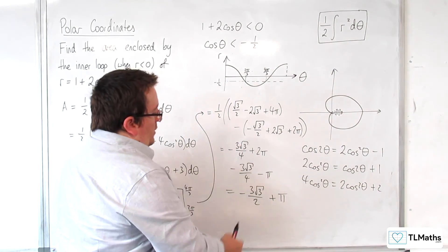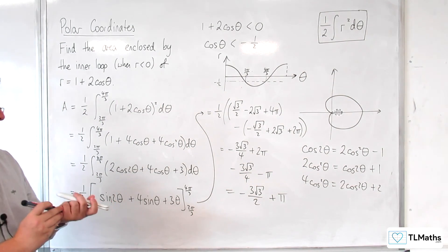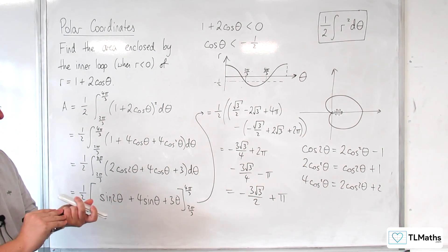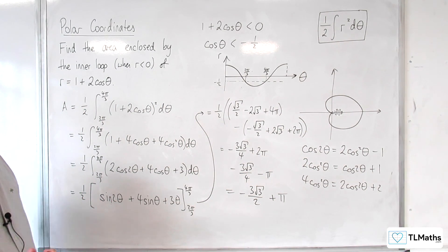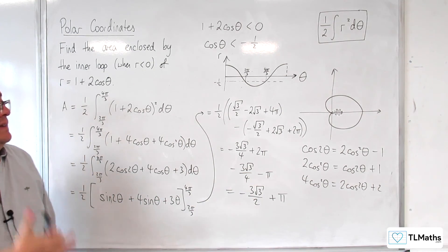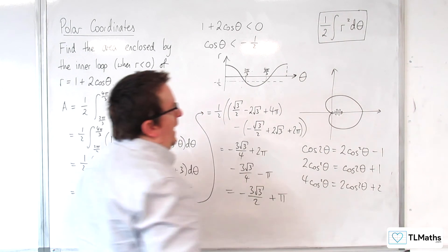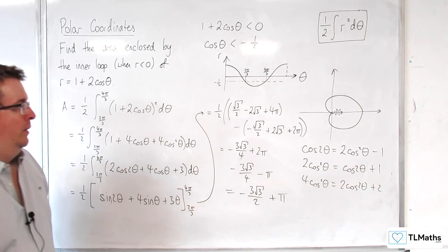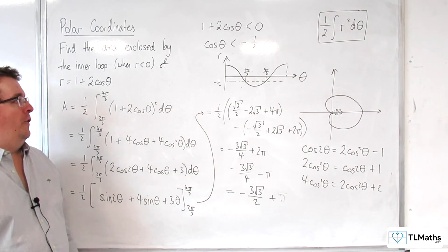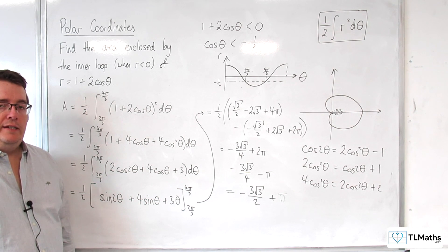So you can write it as π minus 3 root 3 over 2, or equivalently minus 3 root 3 over 2 plus π — either way is fine. And that is the exact area of the inner loop of the curve r equals 1 plus 2 cosine theta.